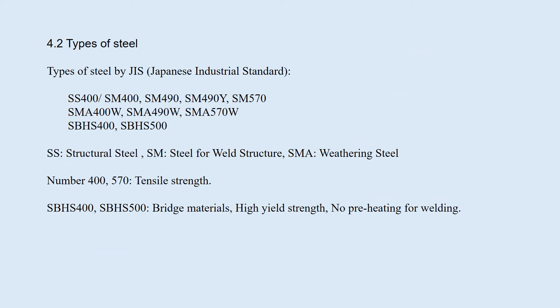Section 4.2: Types of steel. Strengths and quality of steel must be confirmed by proper specifications. In Japan, JIS — Japanese Industrial Standard — specifies chemical components and mechanical properties. SS400, SM400, SM490, SM490Y, and SM570 are most commonly used for bridges.